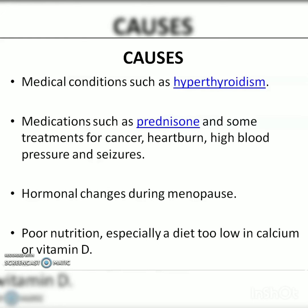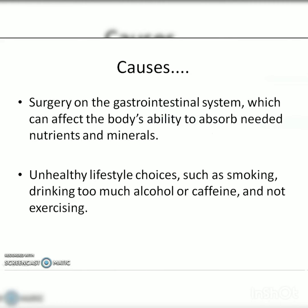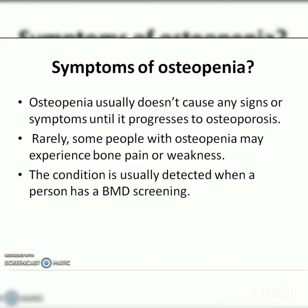Key causes of osteopenia include hypothyroidism, use of prednisone or corticosteroids (injections or medications), use of certain medicines for cancer, heartburn, high blood pressure, and seizures. Hormonal changes during menopause, poor nutrition, and surgeries on the gastrointestinal system can also affect the body's ability to absorb needed nutrients and minerals. Unhealthy lifestyle choices such as smoking, drinking too much alcohol or caffeine, and not exercising are also risk factors, since exercise helps the bone absorb calcium and vitamin D, leading to a stronger musculoskeletal system.